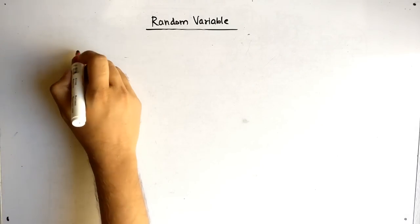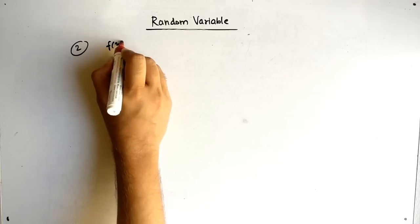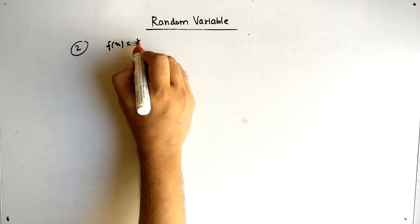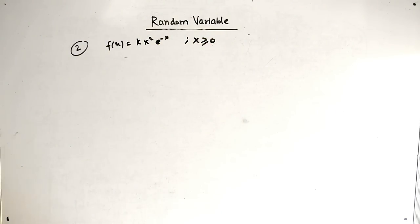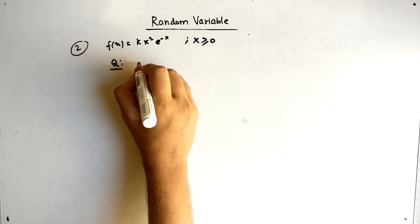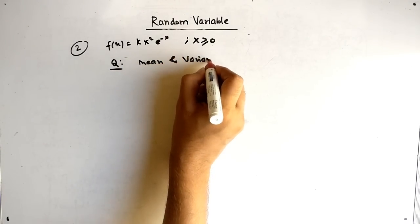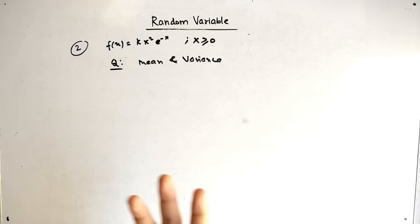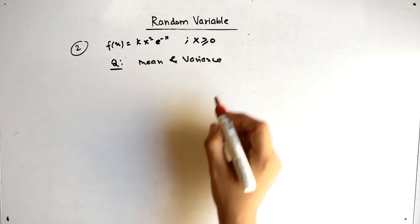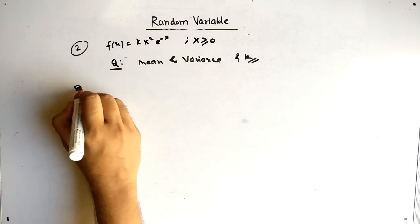Now let's take the second variety. We have small f(x) equals kx² e raised to minus x, where x is greater than or equal to 0. The question asks us to find mean and variance. In the previous part we found probabilities over a range; in this case we have to find mean and variance, and finding k is still compulsory.